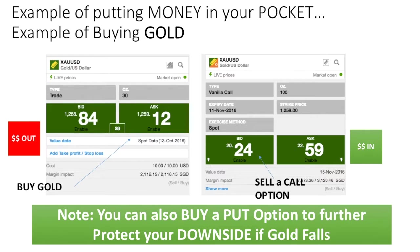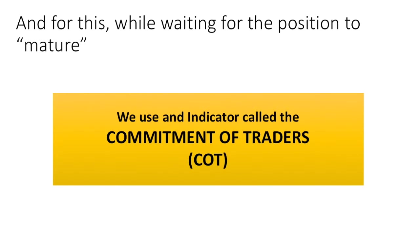You can also buy a put option to further protect your downside if gold falls. I just want you to understand this is a way to collect money upfront from the broker rather than buying and praying it goes in your direction. This is very important because it allows me to wait for the position to mature while earning money. The third element is an indicator called Commitment of Traders, which is quite accurate. It shows the positioning of large commercial traders, large speculators, and small traders like you and me, allowing you to make a very good judgment on market direction.